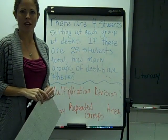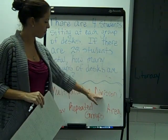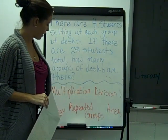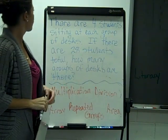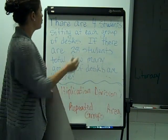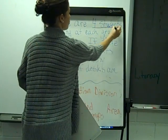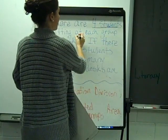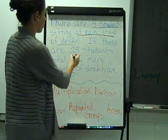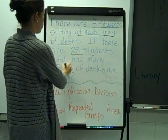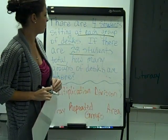We're going to take a look at another type of story problem, trying to figure out are we multiplying or dividing? Is it an array of repeated groups or area? There are four students sitting at each group of desks. If there are 28 students total, how many groups of desks are there?